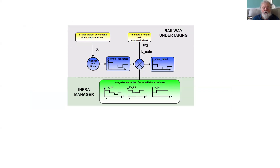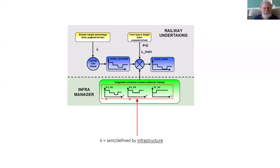For a lambda train, the brake weight percentage is entered by the driver and the train type - whether the brakes are working in P or G setting - is also entered. That is all fed through a conversion model to generate a series of brake curve steps that the train can use for the ATP function. In addition, factors can be applied by the infrastructure manager as part of the national values, sent in packet 3.